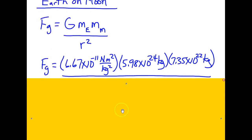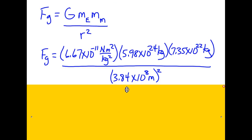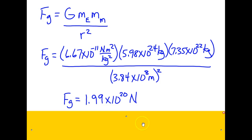We go ahead and substitute. Find the mass of the Earth to be 5.98 times 10 to the 24th kilograms. Mass of the Moon 7.35 times 10 to the 22. Divide by the distance between them, 3.84 times 10 to the 8th. Don't forget to square. Go ahead and perform the calculation. And you should find that the gravitational attraction between the Earth and the Moon is 1.99 times 10 to the 20th Newtons.